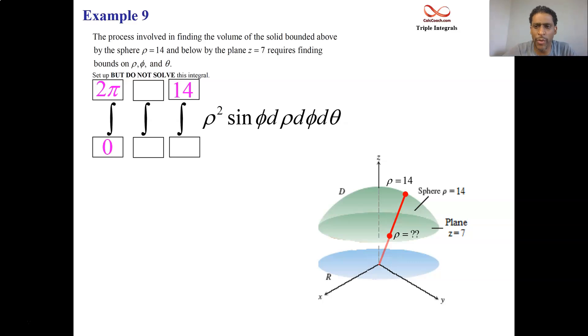So if z equals 7, what does that mean about rho? Well, the connection between z and rho is that z is rho cosine phi. So rho cosine phi should be 7. We're solving for rho. We want the lower bound on rho, we're going to have to divide by cosine phi.